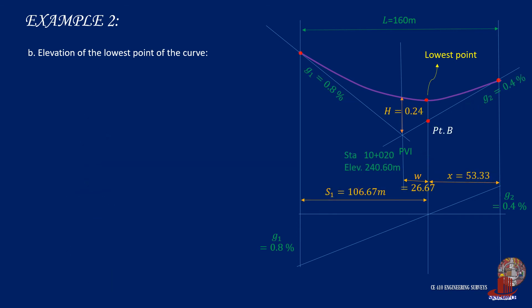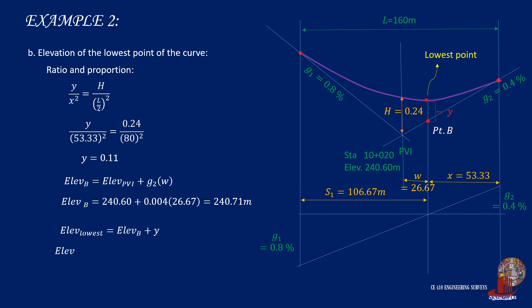H is computed to be able to complete the ratio and proportion of the verticals to the square of the horizontals. So Y is computed as 0.11. Again, Y is the distance from the tangent to the curve, so determine the elevation of the tangent by adding the grade with the distance, and it gives us 240.71 meters. From here, take the elevation of the lowest point by adding Y to the tangent elevation, which will give 240.82 meters.